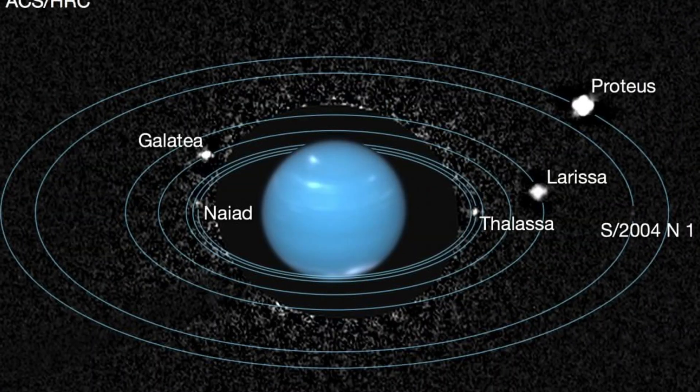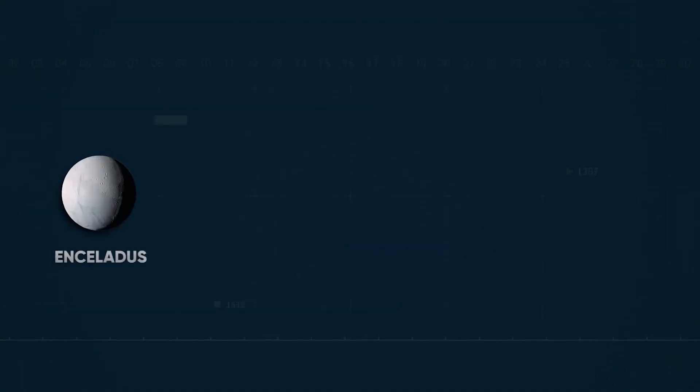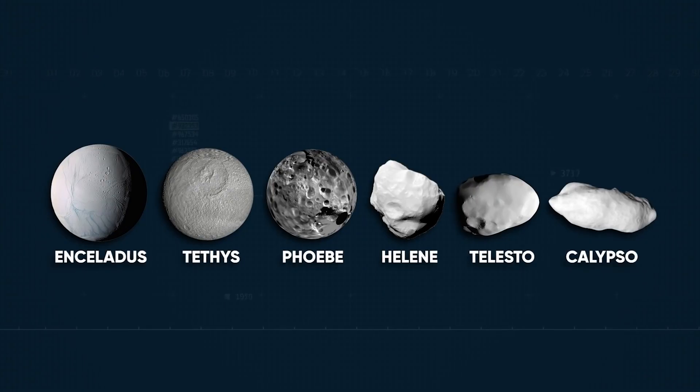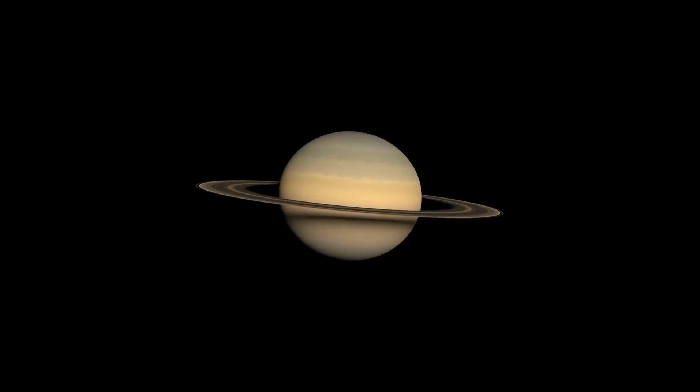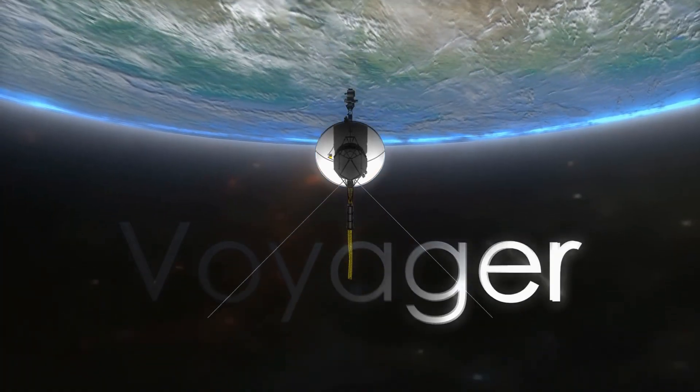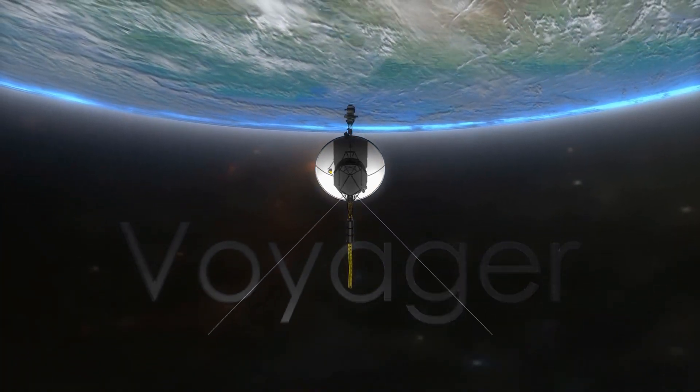Now that it was sure that Neptune had rings, Voyager 2 discovered at least three extra and photographed the entire ring system. We now know that all four of our solar system's larger-sized planets—Saturn, Jupiter, Uranus, and even Neptune—have rings, and that each is unique from the others thanks to the Voyager mission.